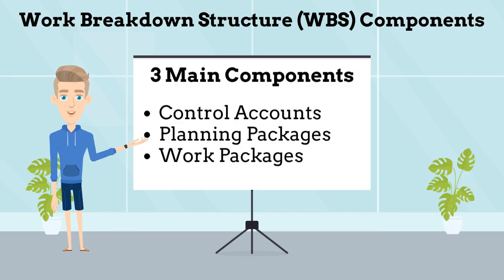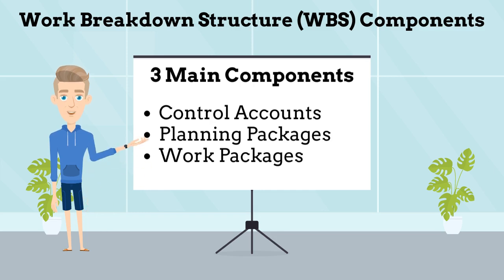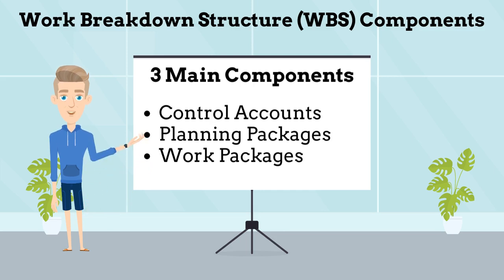There are three main components of a WBS that help with defining the program. These are: Control Accounts. A control account is a management control point at which budgets, resource plans, and actual costs are accumulated and compared to earned value for management control purposes. Any WBS elements at which the project plans to monitor and report performance.